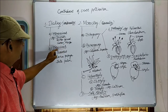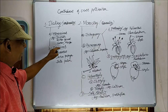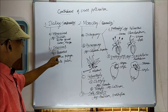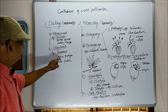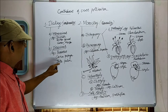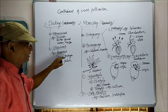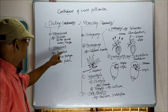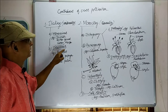In the dioecious condition, it can be seen in the plant borassus, carica papaya, and date palm. These are the dioecious plants.